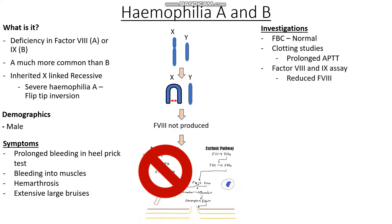The next thing we want to do is make sure that we have enough factor VIII and factor IX, so we can do factor VIII and factor IX assays. Based on whether we have haemophilia A or haemophilia B, we're going to have reduced levels of either factor VIII or factor IX. Another thing that might give you a prolonged APTT is von Willebrand's disease, so it's really important to do a von Willebrand factor assay and make sure those levels are normal. Lastly, we should carry out some liver function tests, because these proteins are made in the liver, and if the liver is dysfunctioning, we may also get reduced levels of factor VIII and factor IX.